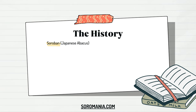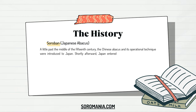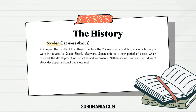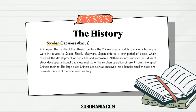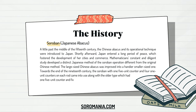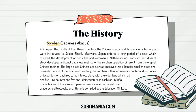The Soroban, Japanese Abacus: a little past the middle of the 15th century, the Chinese abacus and its operational technique were introduced to Japan. Shortly afterward, Japan entered a long period of peace, which fostered the development of her cities in commerce. Mathematicians' constant and diligent study developed a distinct Japanese method of Soroban operation different from the original Chinese method. The large-sized Chinese abacus was improved into a handier, smaller-sized one. Towards the end of the 19th century, the Soroban with one five-unit counter and four one-unit counters on each rod came into use alongside the older type. In 1938, the technique of Soroban operation was included in the National Grade School Textbooks on Arithmetic compiled by the Education Ministry.